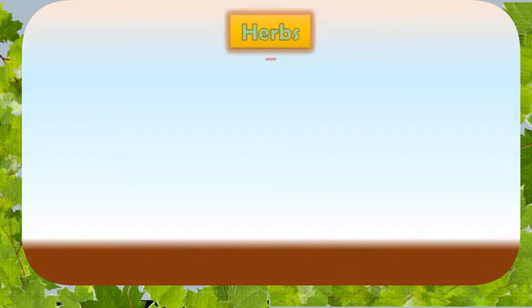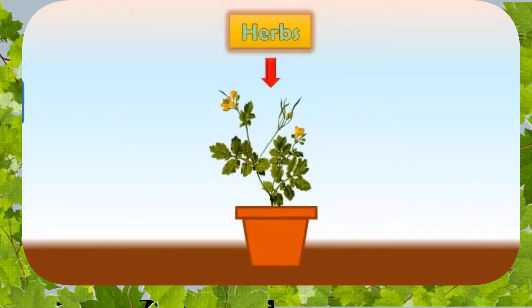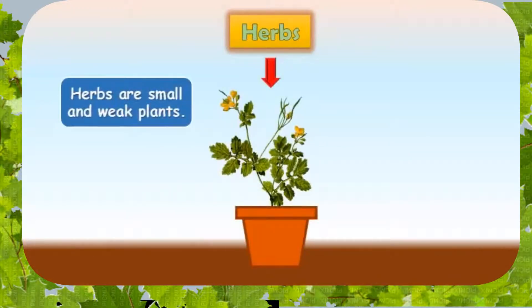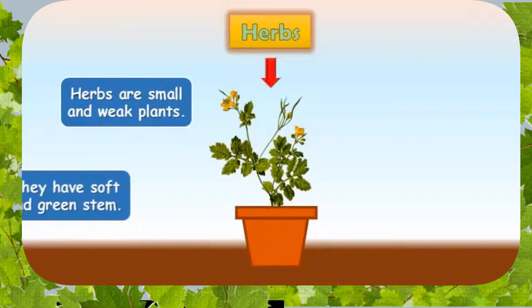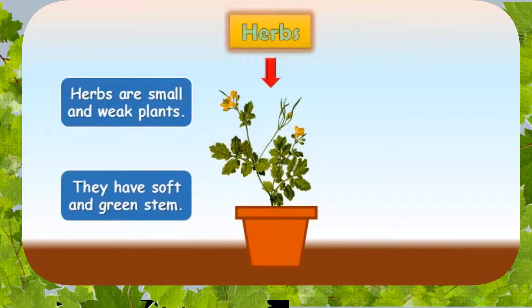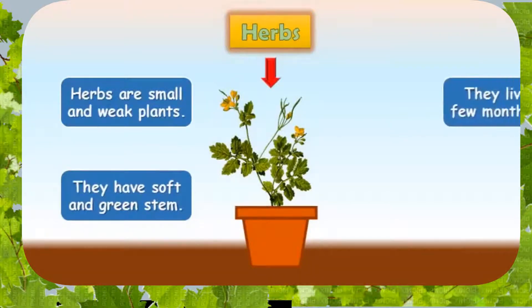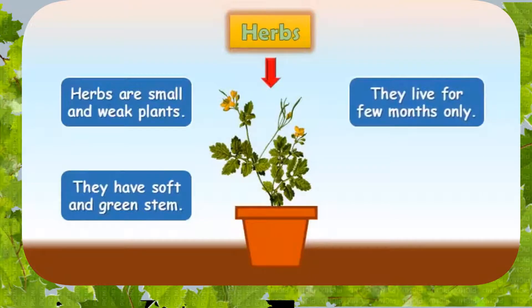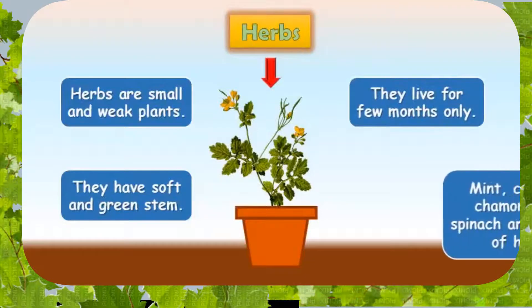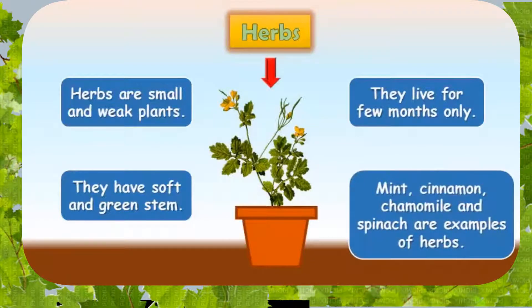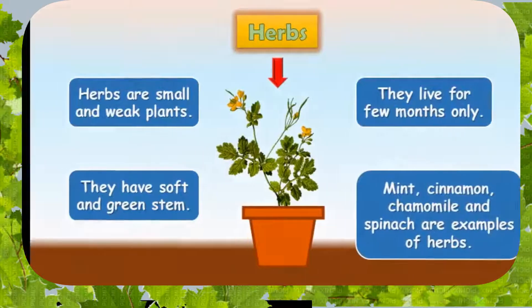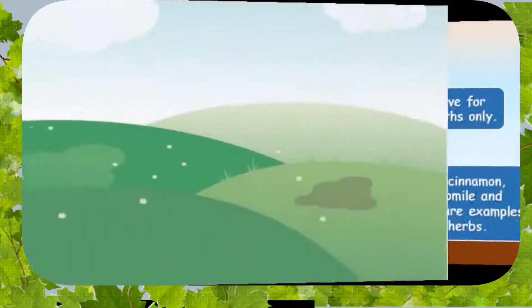We also have herbs. Herbs are small and weak plants. They have soft and green stems. They live only a few months. We often take them as food.